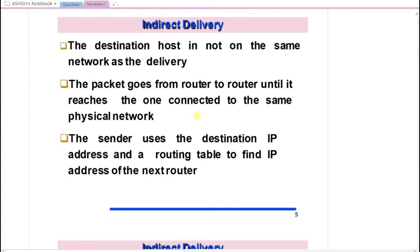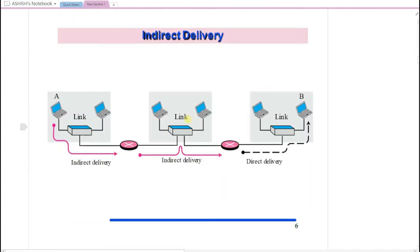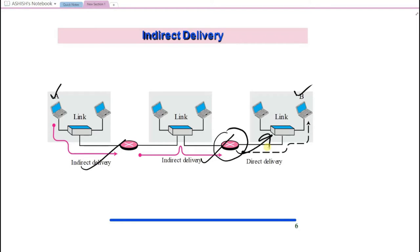Indirect delivery is when the source and destination are part of different networks. But every indirect delivery also involves one direct delivery. When a packet goes from one router to the final router connected to the destination, that last hop is a direct delivery. So in every indirect delivery, there is one direct delivery.